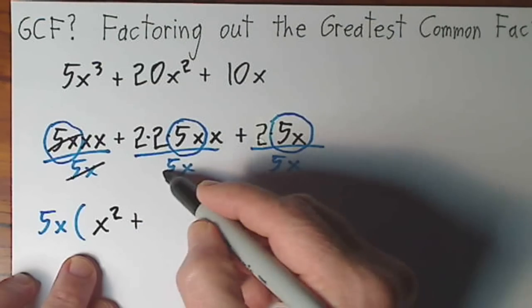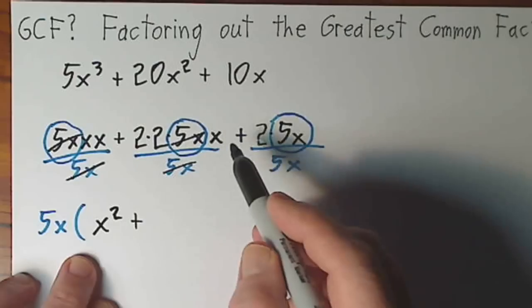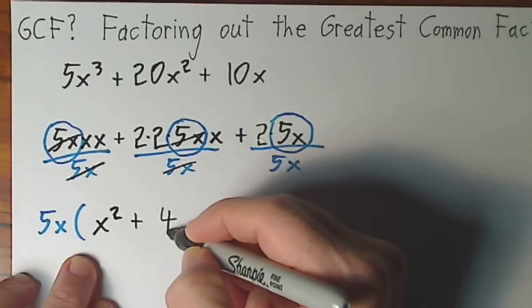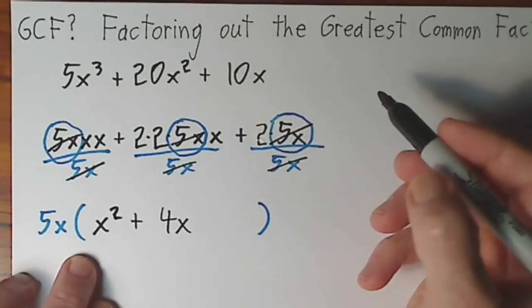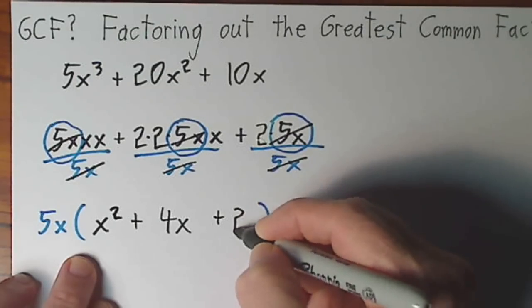For your next term, the 5x's cancel and you're left with 4x. And for our last term, the 5x's cancel and you're left with just plus 2.